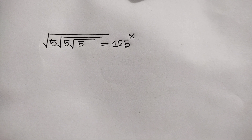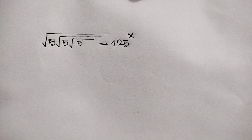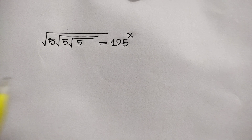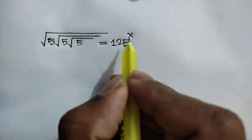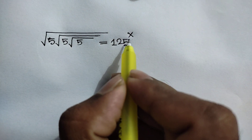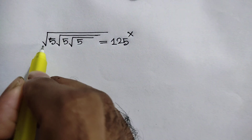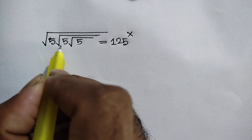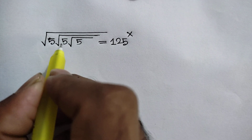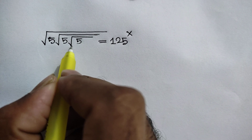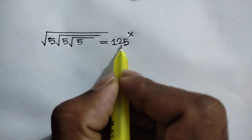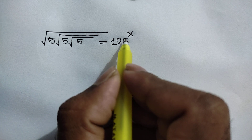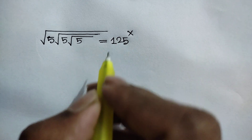Hi everyone. In this video I am going to show how to find the value of x where square root of 5 times square root of 5 times square root of 5 is equal to 125 to the power x.